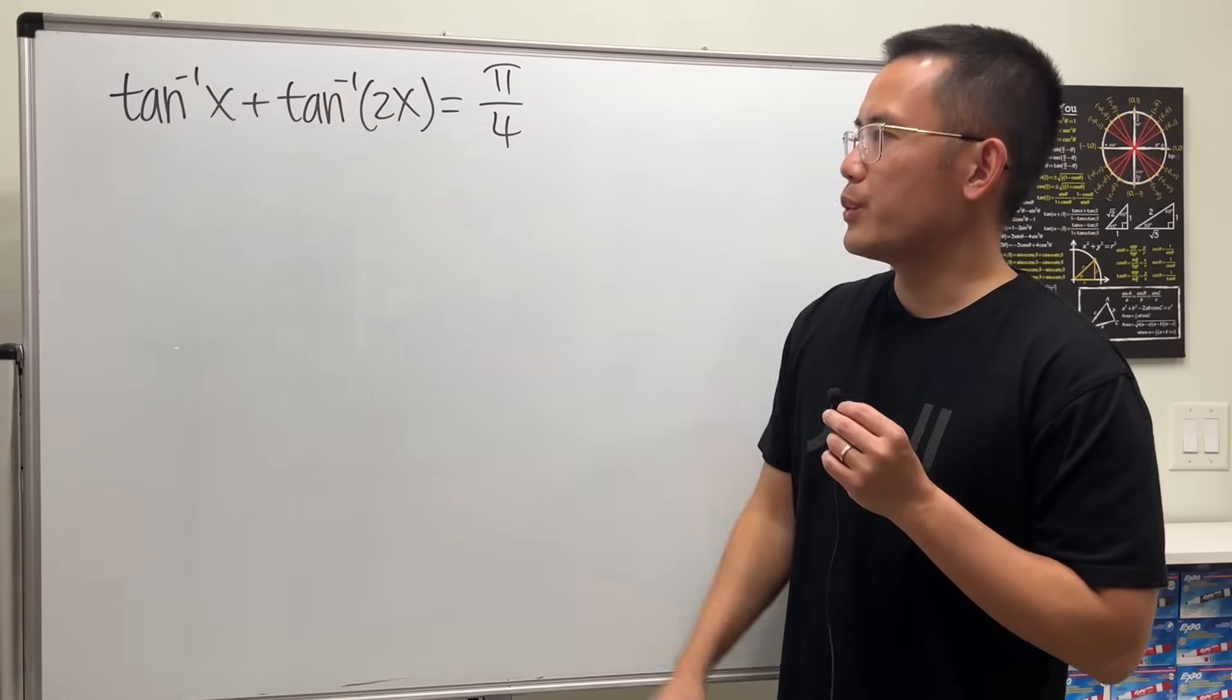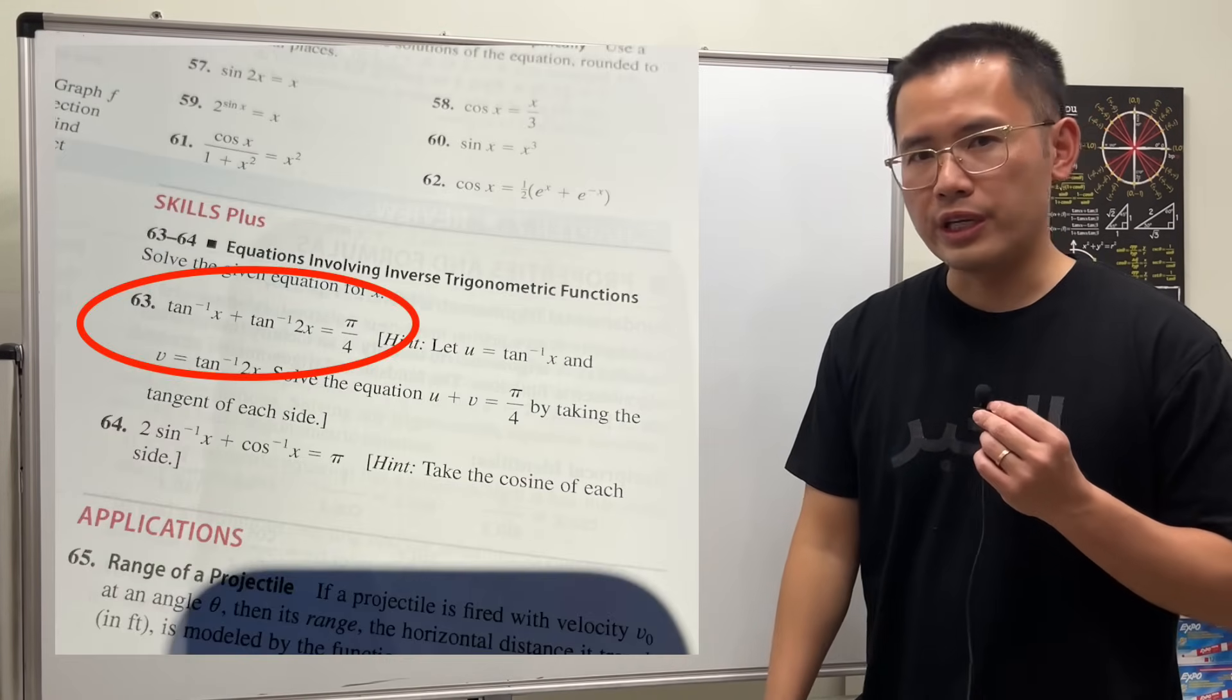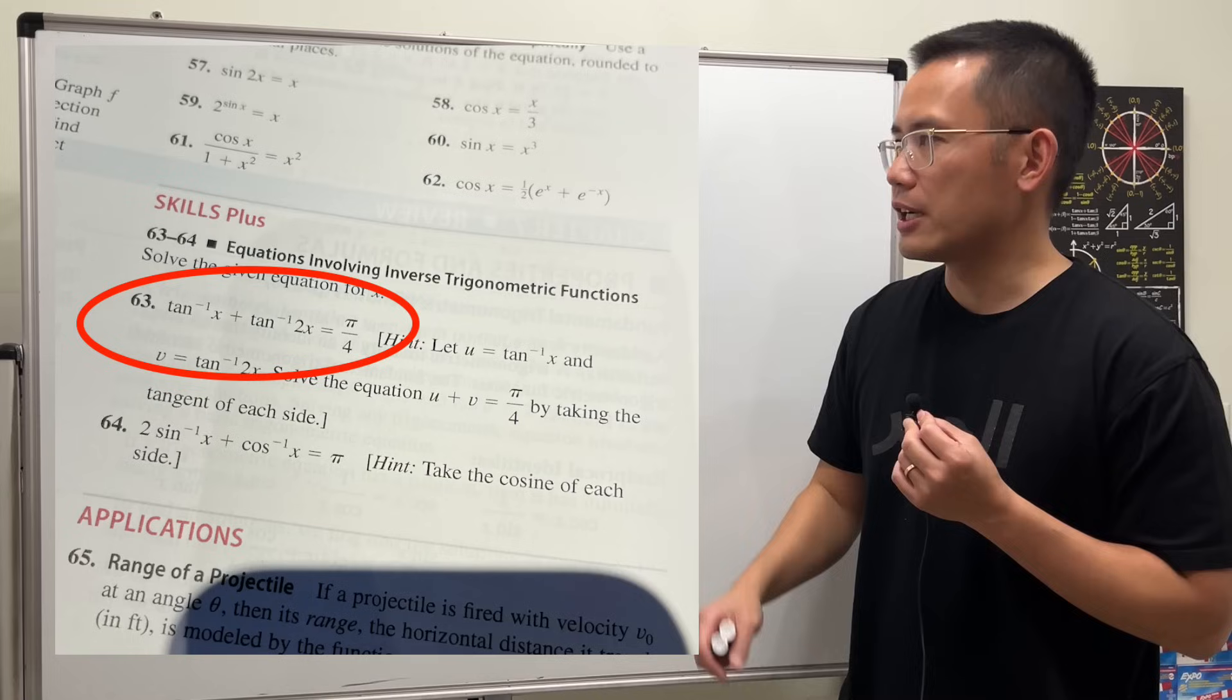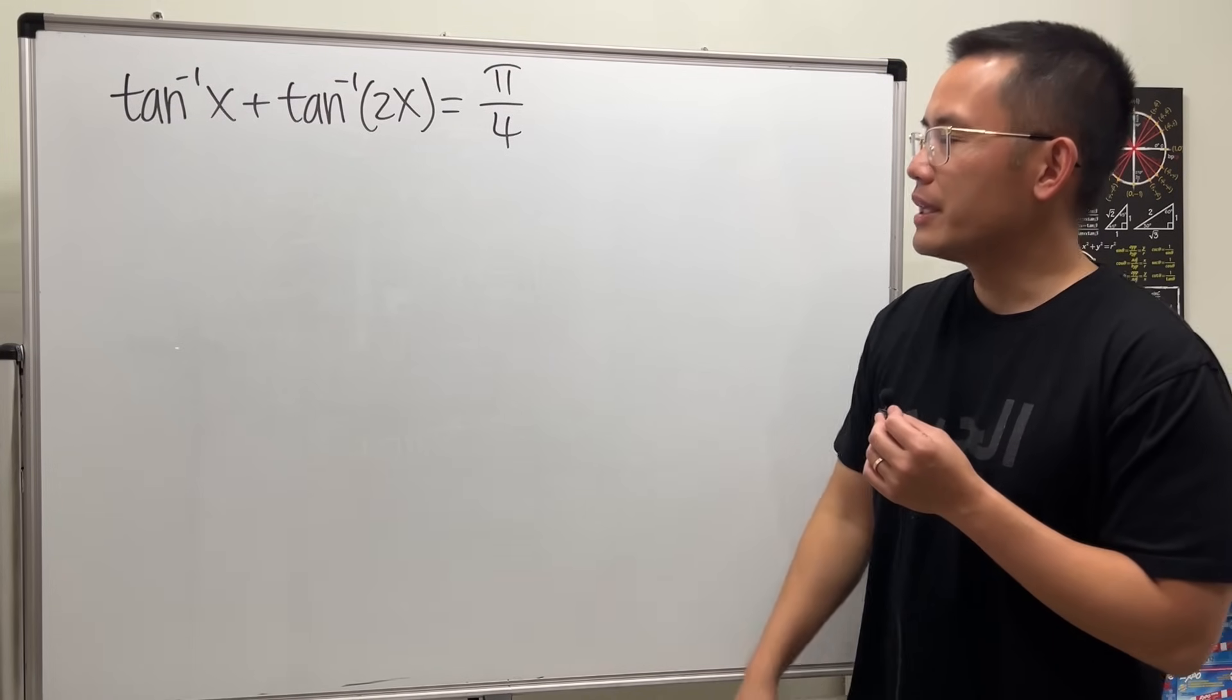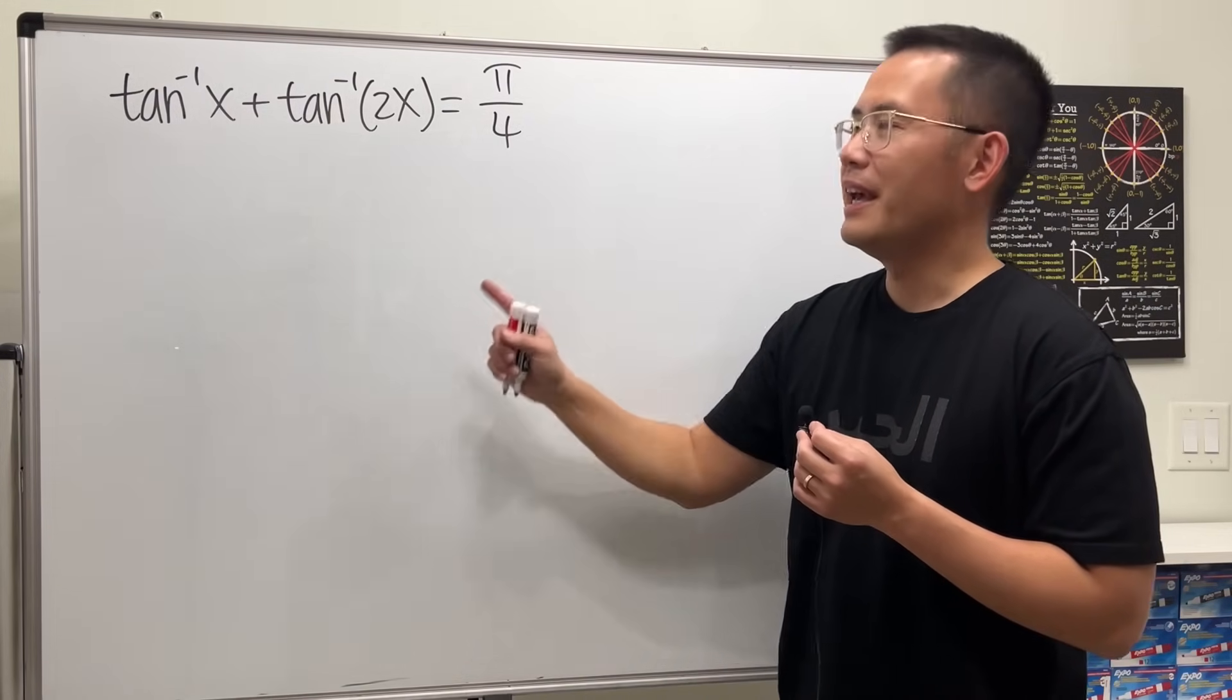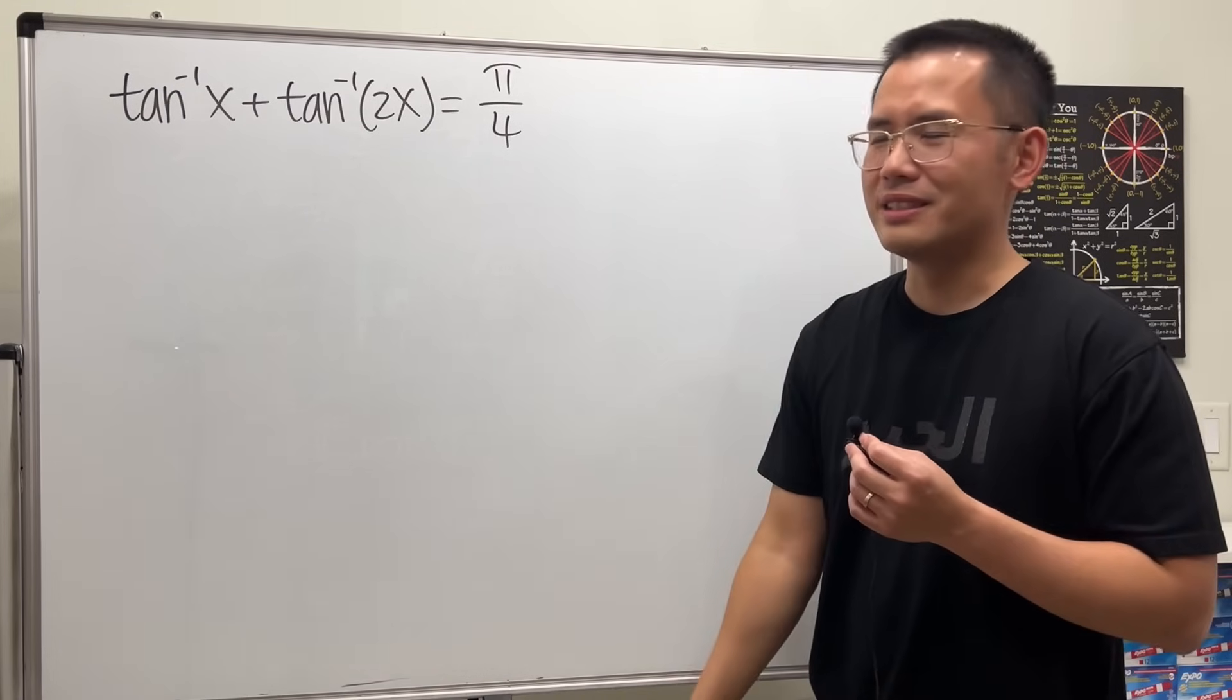So let's see how we can solve this equation with inverse tangent. This equation is from the pre-calculus textbook by James Stewart. In fact, it's from the challenge section, so it's meant to be more difficult than the usual equations. Here we have inverse tangent of x plus inverse tangent of 2x equal to pi over 4.